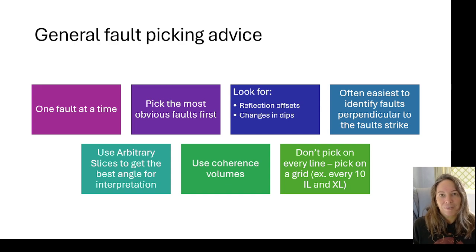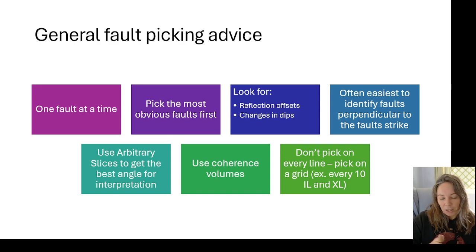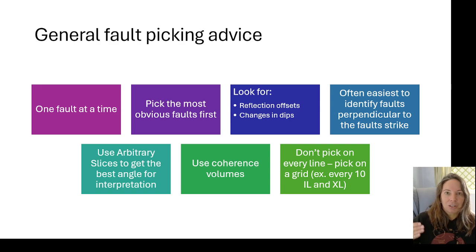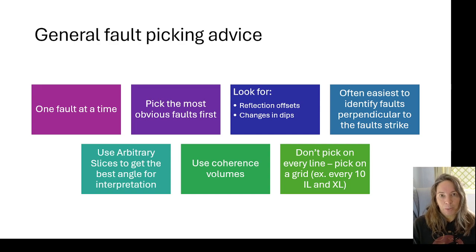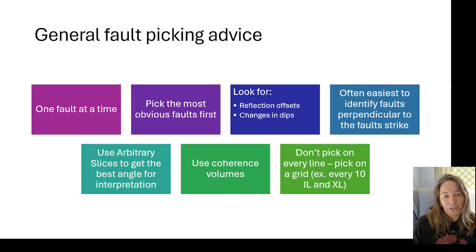Pick the most obvious fault first. You can do reflection offsets, changes, and dips. As I mentioned, you want to try to pick your fault moving perpendicular to the strike of the fault. In a lot of cases you want to use arbitrary slices and arbitrary lines. A lot of folks just tend to move through inlines and cross lines, but that's not the ideal way to interpret. You also want to use coherence volumes.